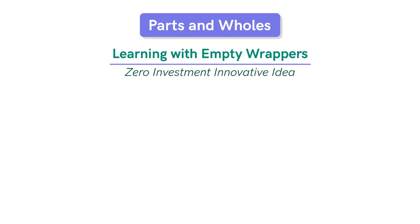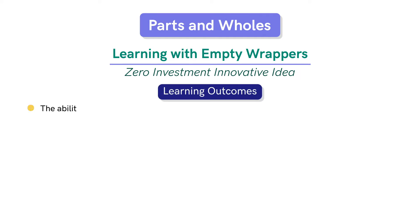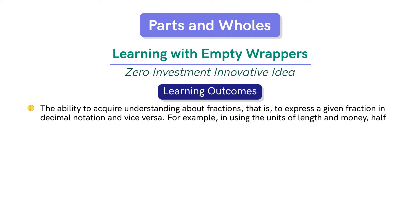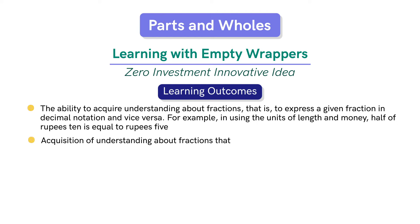Through the implementation of this innovative idea, we aim to achieve the following among the students: the ability to acquire understanding about fractions — that is, to express a given fraction in decimal notation and vice versa. For example, using the units of length and money: half of rupees 10 is equal to rupees 5. Students also gain the ability to convert fractions into decimals and vice versa.